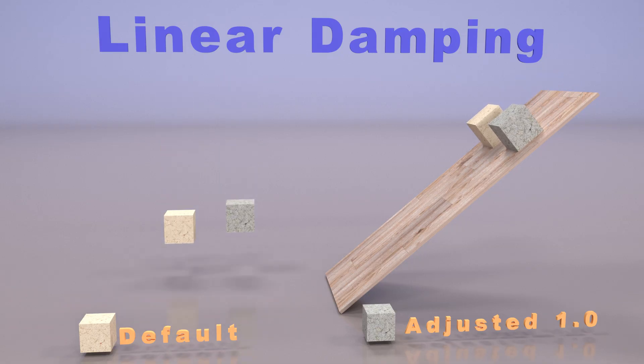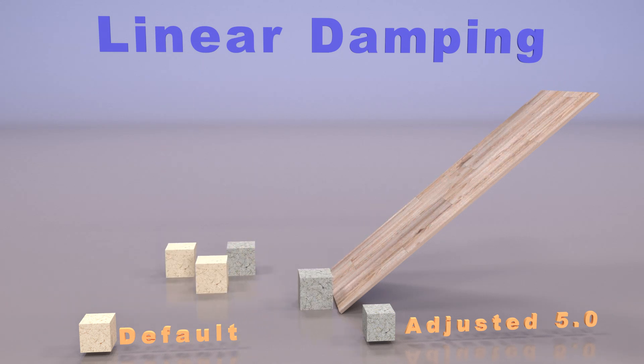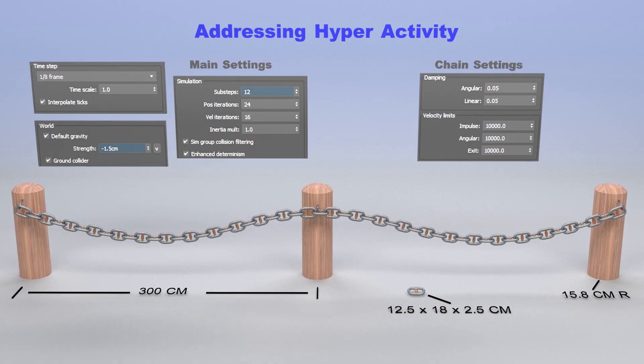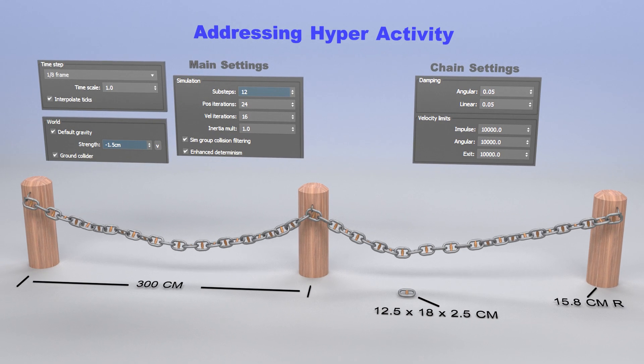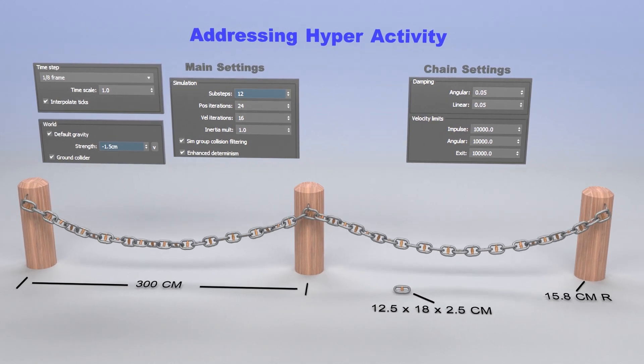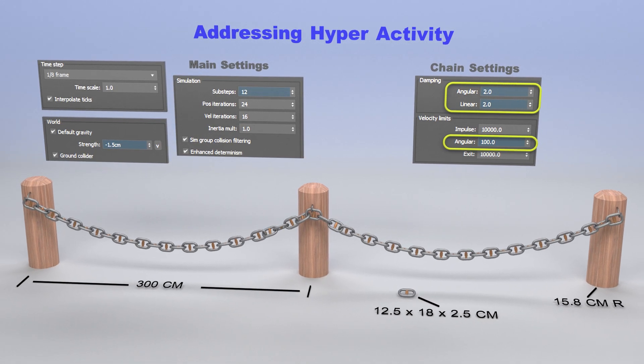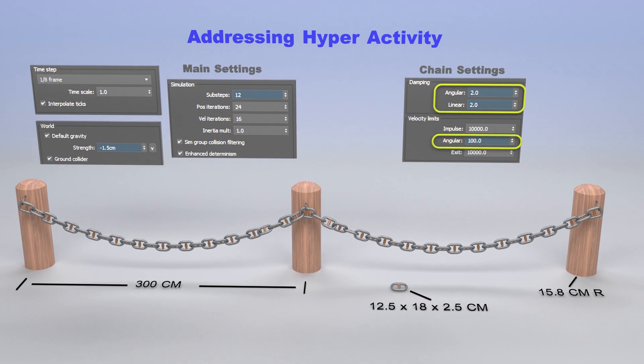So there are really five critical settings here that help us control our animations and hyperactivity. It seems ever present in Tyflow PhysX especially when you pin between objects like this chain. But it can be controlled. These five settings are very critical to controlling this stuff.